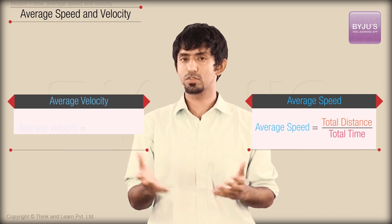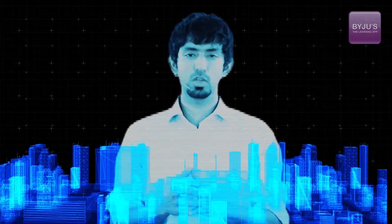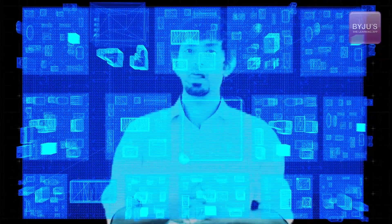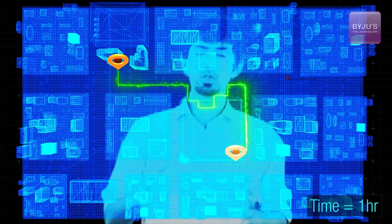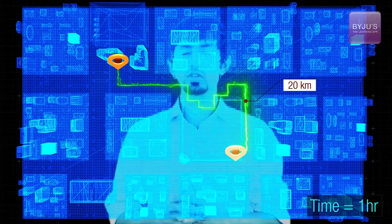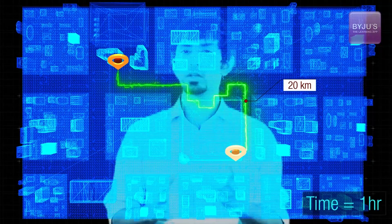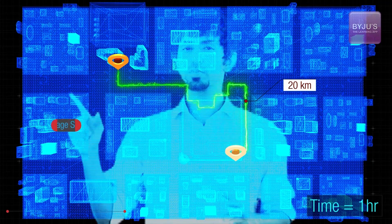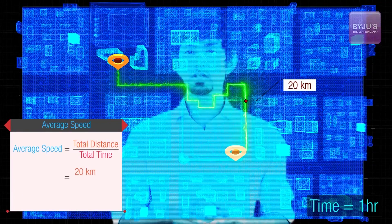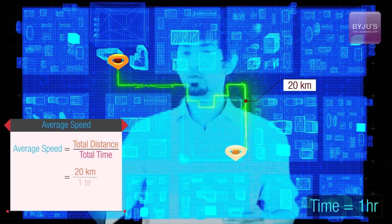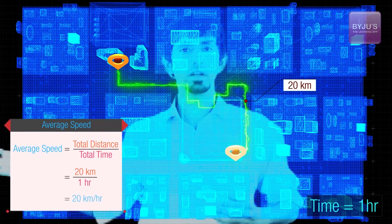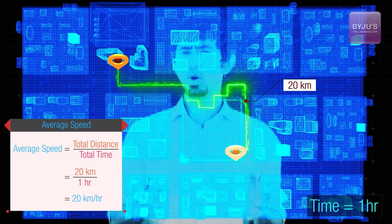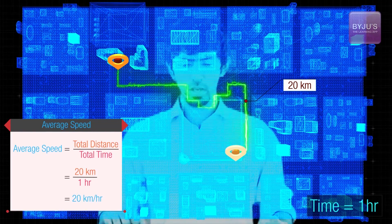We have defined two quantities: average speed and average velocity. Let's say your friend lives 20 kilometers away from you, and you took some path where the path length was about 20 kilometers, and you traveled it in one hour. The distance you covered was 20 kilometers and the time you took was one hour, so your average speed is 20 kilometers per hour.